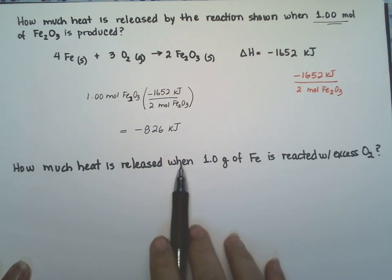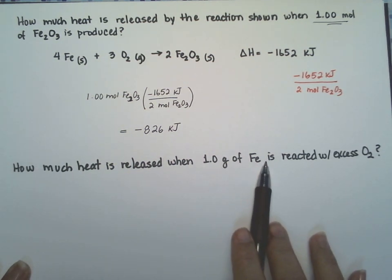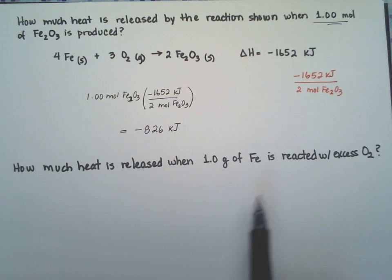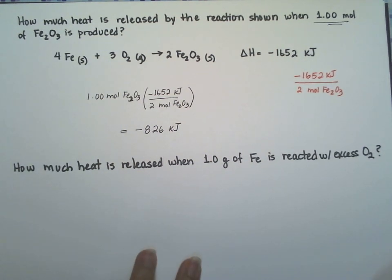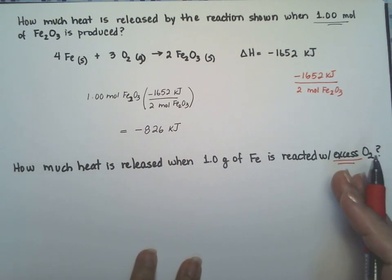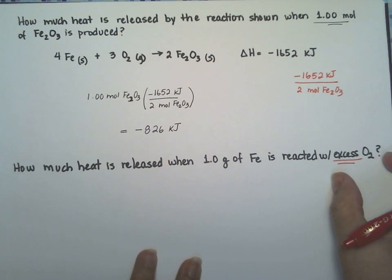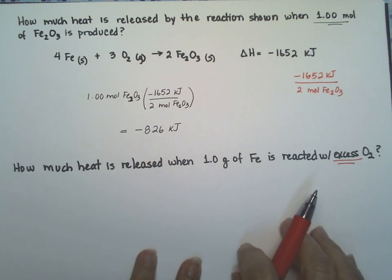Now, how much heat is released when one gram of iron is reacted with excess oxygen? When they put excess, that means you have plenty of oxygen to do the reaction and then some more. So you don't have to calculate limiting reagents. The excess oxygen gives you everything you need with some left over.